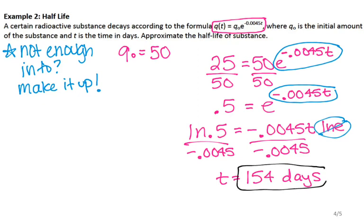If the problem doesn't give you enough information, go ahead and make up initial values. Since we're talking about half-life, my initial value is 50, so I cut that in half, giving 25. You can do this with compound interest formulas as well — if no initial value is given, make one up, then whether you're doubling, tripling, or taking halves for half-life, just go through the problem like you normally would.